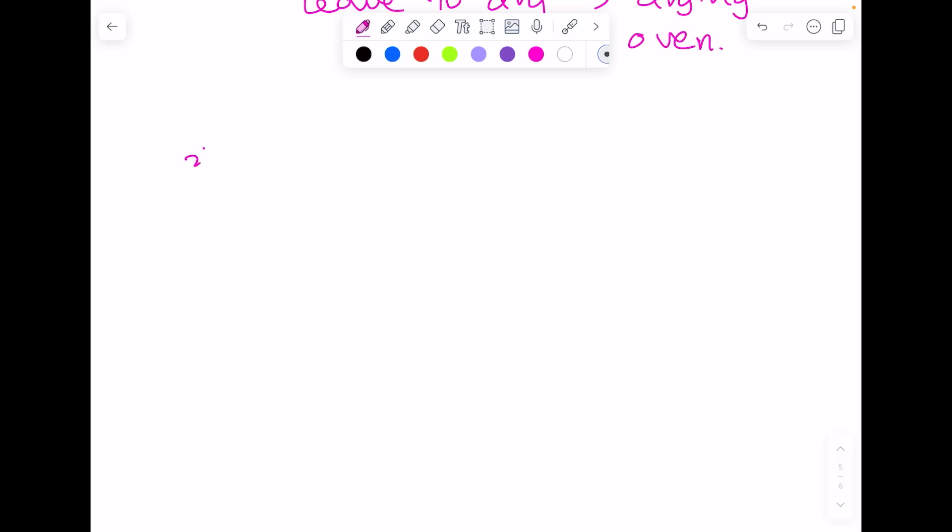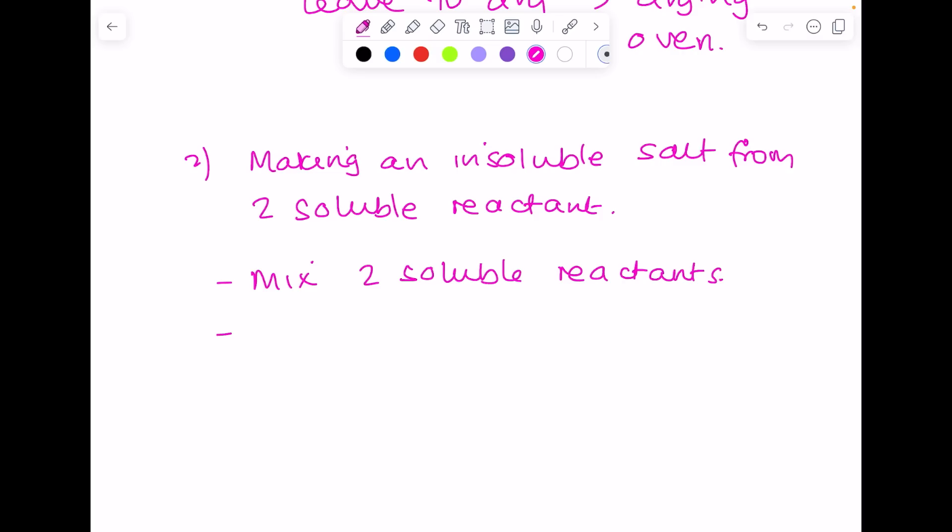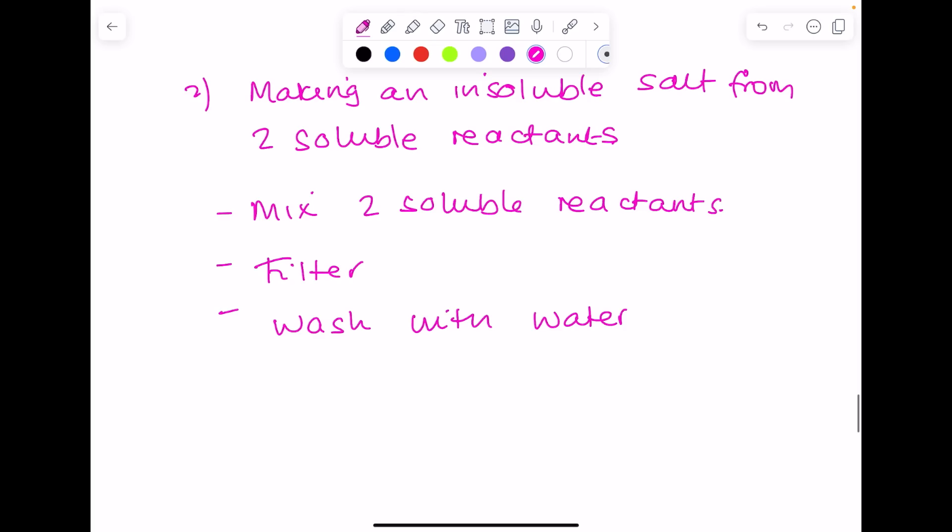But what about if I wanted to make an insoluble salt from two soluble reactants? So I'm going to have to use a different approach here. So I'm going to mix my two soluble reactants. So once I've mixed them together I'll produce my insoluble salt, but there'll still be some reactants left over. So I want to filter, and then I want to wash with water to remove any of the soluble reactants left. And then quite frankly what I need to do is leave to dry in a drying oven.